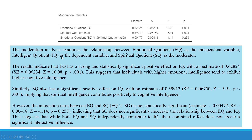The moderation analysis examines the relationship between Emotional Quotient as the independent variable, Intelligent Quotient as the dependent variable, and Spiritual Quotient as the moderator. The results indicate that EQ has a strong and statistically significant positive effect on IQ, with an estimate of 0.62824 and a P-value less than 0.05. This suggests that individuals with higher emotional intelligence tend to exhibit higher cognitive intelligence.